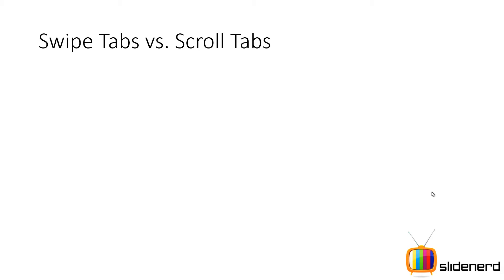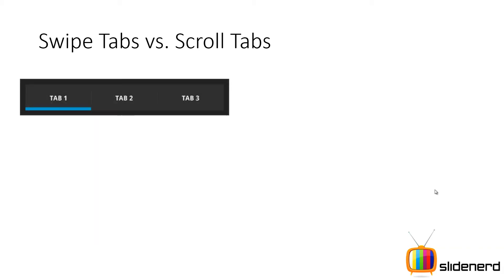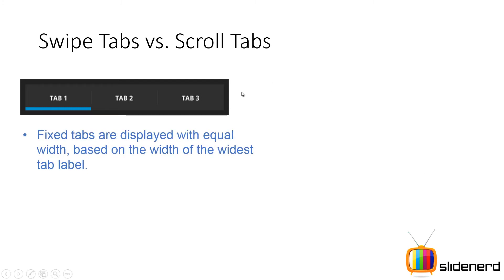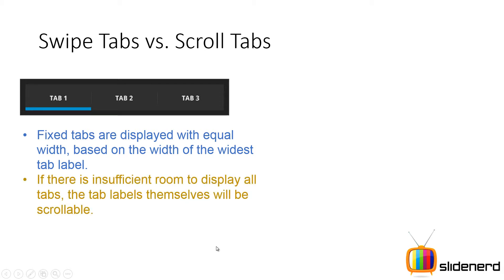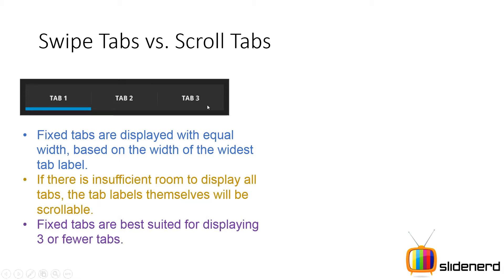Let's first begin our discussion with the two major types of tabs that we have. One of them is the swipe tab. When you have a swipe tab, you click on tab 2 and it will take you to the content of tab 2. Even otherwise if you swipe your screen towards the right side, it will still jump from tab 1 to tab 2, and that is the reason why it's called a swipe tab. Make sure that you have only a few of those tabs when you are using swipe tab, because the widest tab that you see is based on the width of one of the strings.